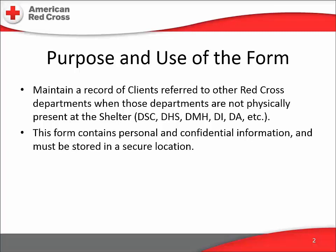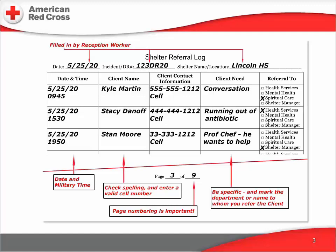Whether the client needs a referral to disaster spiritual care, disaster health services, disaster mental health, disability integration, disaster assessment, or whatever the other team is, we can provide the referral and keep track of it on this form. This is the shelter referral log form. The top information should be very familiar to you by now: the date this page was started, the official identification number of the disaster operation, and the name of the shelter. The Red Cross staffer assigned to maintain this log will fill in this line.